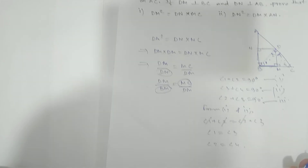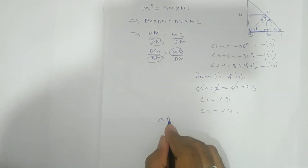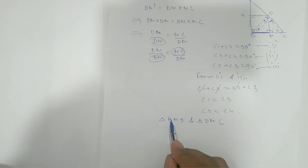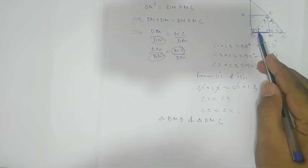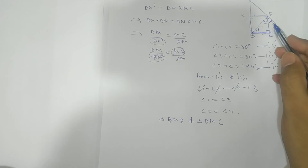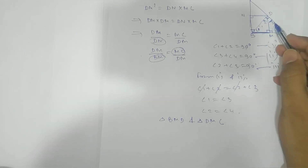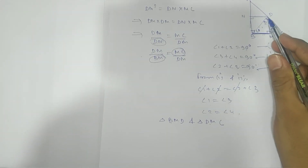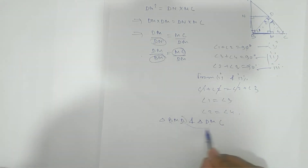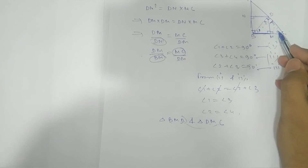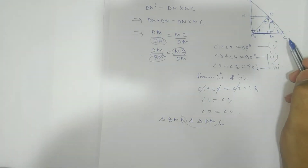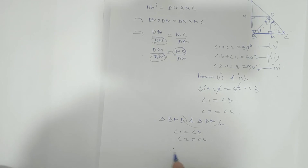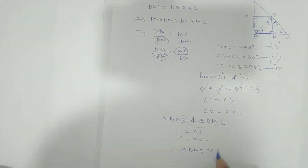Now consider triangle BMD and triangle DMC — the order is very important. In triangle BMD, angle at B corresponds to angle 1, and angle at D corresponds to angle 3, and we showed angle 1 = angle 3. For the second triangle DMC, angle 2 = angle 4. Therefore, triangle BMD is similar to triangle DMC by the AA similarity criterion.